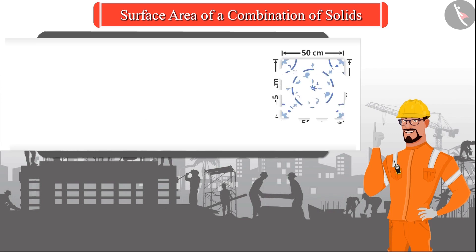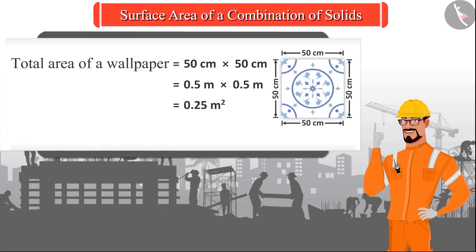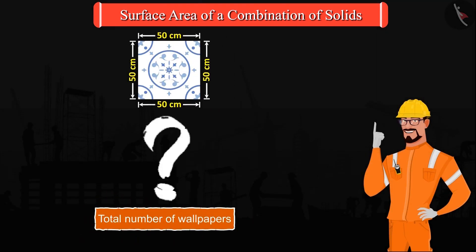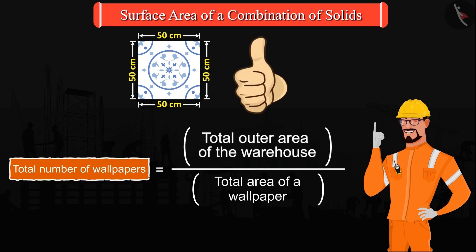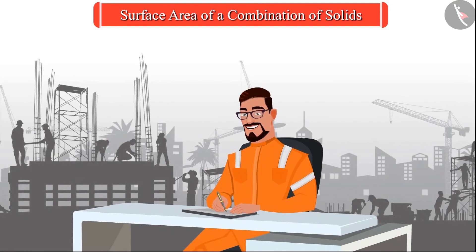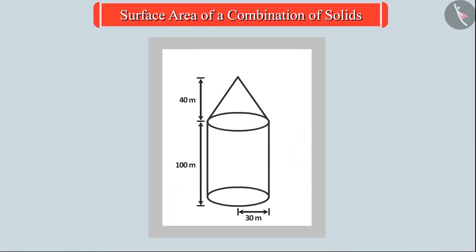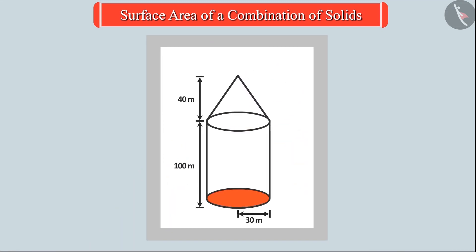The engineer first finds the total area of a wallpaper. For this, the total outer area of the warehouse is to be divided by the area of one wallpaper. Now, with the size and the measurement mentioned, the engineer makes a rough picture of the warehouse. He sees that the wallpaper will not be placed on the base of the warehouse and the part where the cone and the cylinder meet.